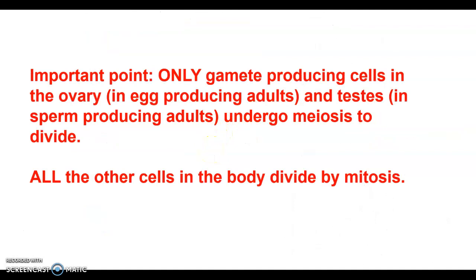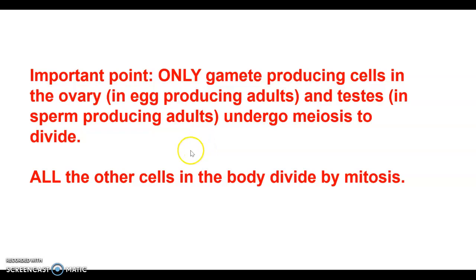Only gamete-producing cells in the ovary and testes undergo meiosis. A cell doesn't wake up and decide today is a meiosis day — cells are pre-programmed. They undergo meiosis if their job is to produce eggs and sperm; otherwise they undergo mitosis. This isn't a decision the cell gets to make. All cells in the body except those producing eggs and sperm divide by mitosis.